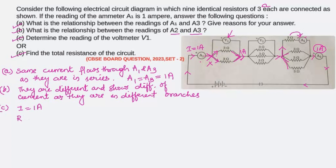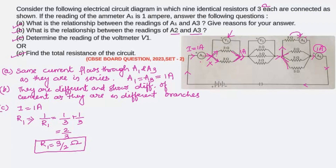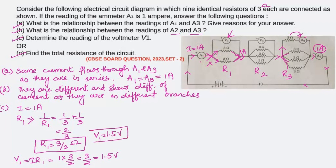Two resistors of 3 ohm each are connected in parallel. The effective resistance R1 is found using: 1/R1 = 1/3 + 1/3 = 2/3, so R1 = 3/2 ohm. Using Ohm's law, V1 = I × R1 = 1 × 3/2 = 1.5 volts. So the voltmeter V1 reads 1.5 volts.